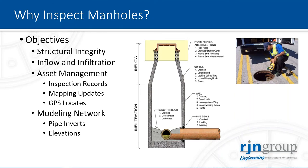Why do we need to do manhole inspections? Most importantly, it's the structural integrity. For many communities, the O&M procedures do not consider putting into their cycle manhole inspections and rehabs. The secondary consideration, which is quite important and significant, is the impacts of I/I. A lot of the items for I/I are easily fixable, especially when dealing with frame and seal and pick-hole repairs.